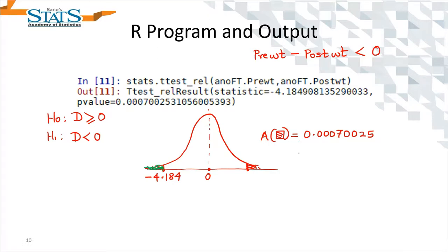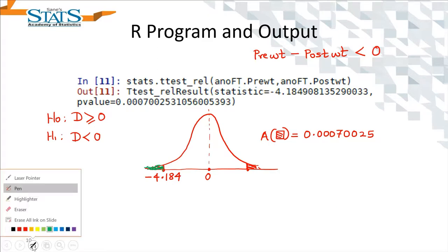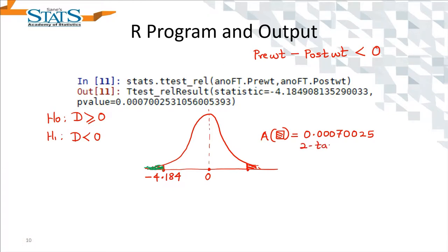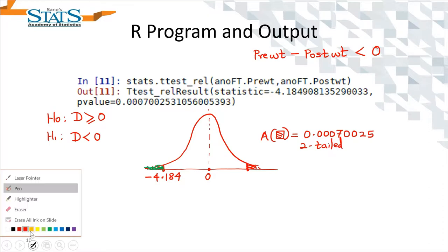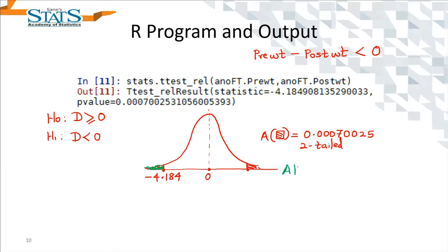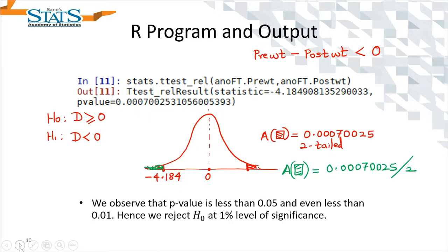So our p-value for the one-tailed test corresponds only to that one zone. The two-tailed p-value of 0.00070025 is divided by 2, giving the one-tailed p-value. Needless to say, this one-tailed p-value is less than 0.05, hence we reject H0 — meaning the treatment may be effective, even at the one percent significance level.